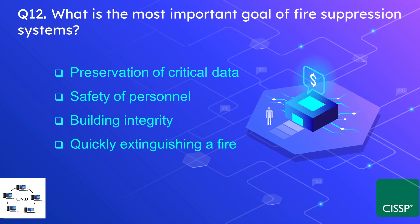Question number twelve: what is the most important goal of a fire suppression system? The options are preservation of critical data, safety of personnel, building integrity, and quickly extinguishing a fire. The correct answer is safety of personnel. Safety of personnel is always the foremost important factor when considering an information security system.